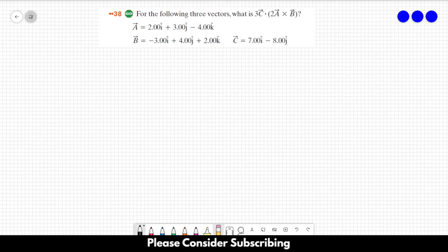Number 38: For the following three vectors, what is 3 times C dot product with 2 times A cross product with B?